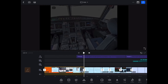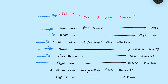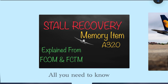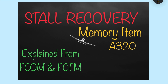Memory item for stall recovery: call out 'Stall, I have control,' nose down pitch control apply, bank wings level. When out of stall, no longer stall indication, thrust increase smoothly, speed brakes check retracted, white path recover smoothly. If clean configuration and below 20,000 feet, flap one select. That is the memory item for stall recovery.